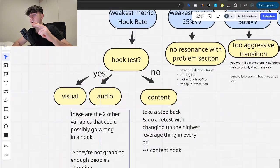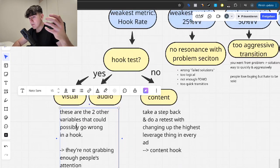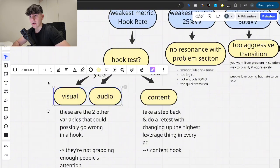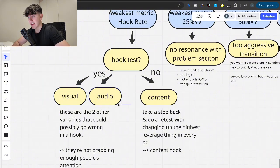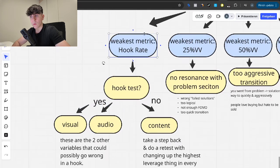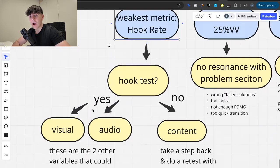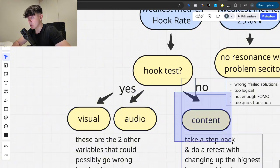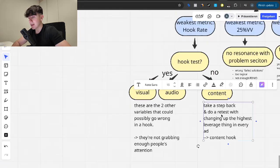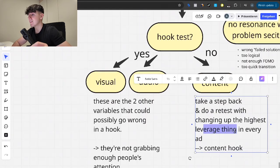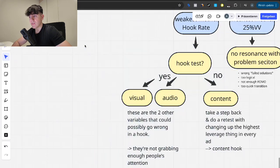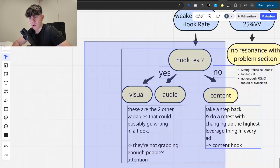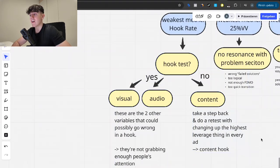Remember how the hook test was this thing right here before we even got stuff into the ad account. And the reason why is once again, we want to isolate the highest leverage thing, the highest leverage variable in every single ad, which is the content hook, the text hook. So we ask ourselves, have we done one? If yes, we're going to make visual variations and audio iterations. These are the two other variables that could possibly go wrong in a hook. And therefore they're not grabbing people's attention enough. Meaning if the text hook content performed really well on the hook test and now the hook rate basically failed and it's the weakest metric in the entire ad, we know that it has to be one of these two or both of these.